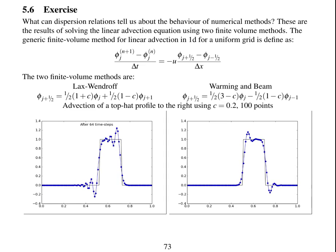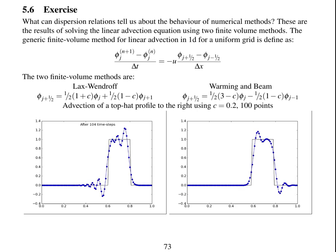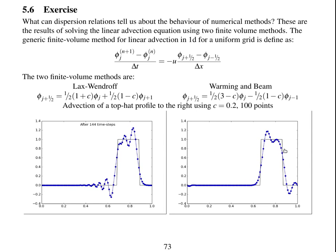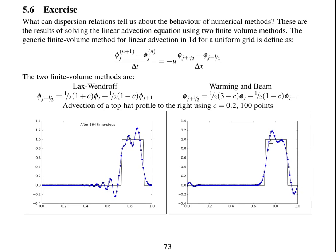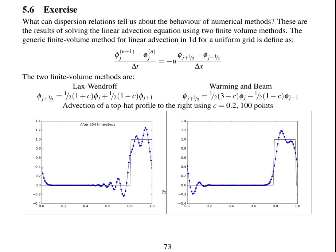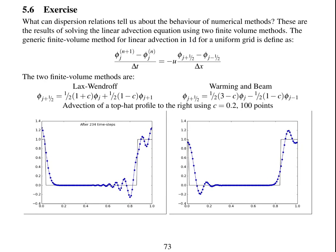So we can see them both moving to the right. We can see both of them have got dispersion errors, the square wave is changing shape. They're both generating oscillations but they're generating them in different places. This one has oscillations ahead of the discontinuity and this one has the oscillations behind the discontinuity.